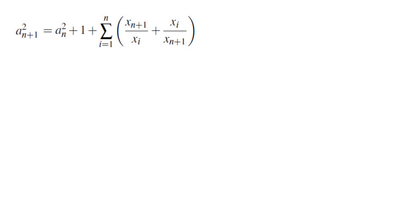The rest of the terms are xn plus 1 over xi, or xi over xn plus 1. If we apply AM-GM to these, we would get aN squared plus 1 plus 2n, and this is less than aN plus 1 squared, which means the best we can get is aN plus 1 is at least aN plus 1, which is again not very helpful.